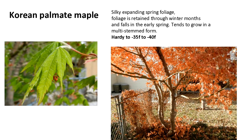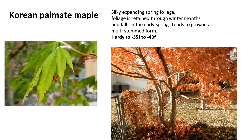I want to mention the Korean palmate maples. Many of us visit the east or west coast and wish we could grow Japanese maples — the true Japanese palmate maple is not hardy in our area. But a close cousin is the Korean palmate maple. It has very silky spring expanding foliage, grows very well here, and tends to grow in a multi-stem form, which is nice in a bed — giving more of a multi-stem effect rather than just a single stem.